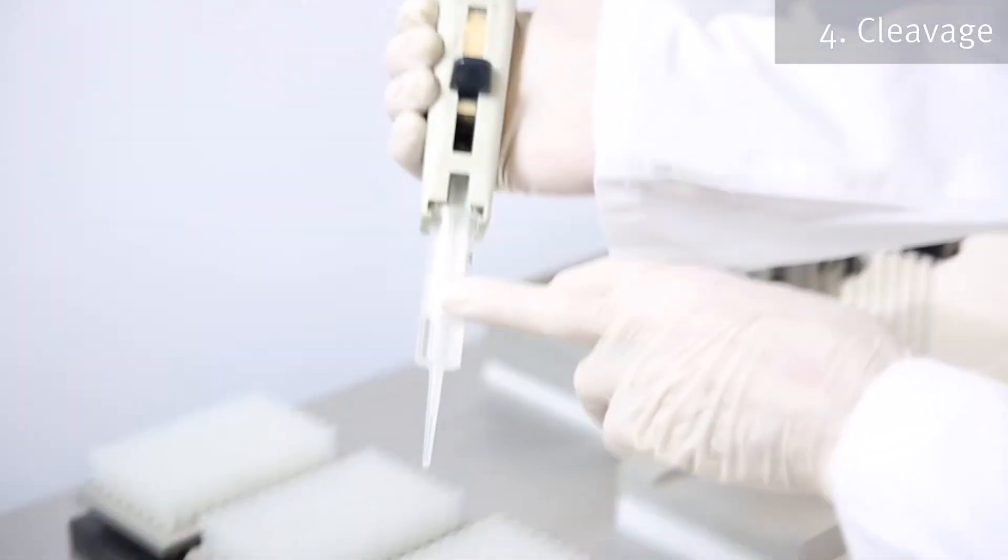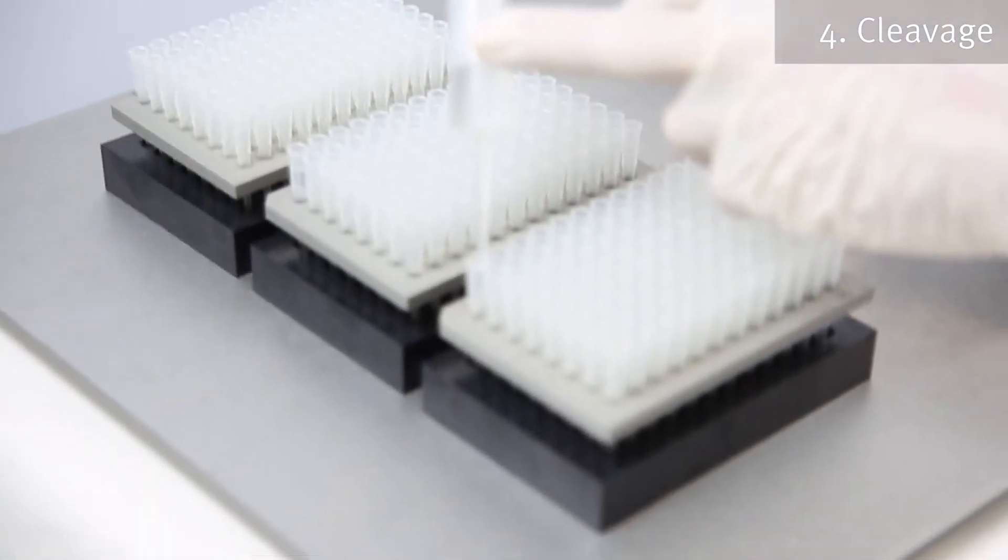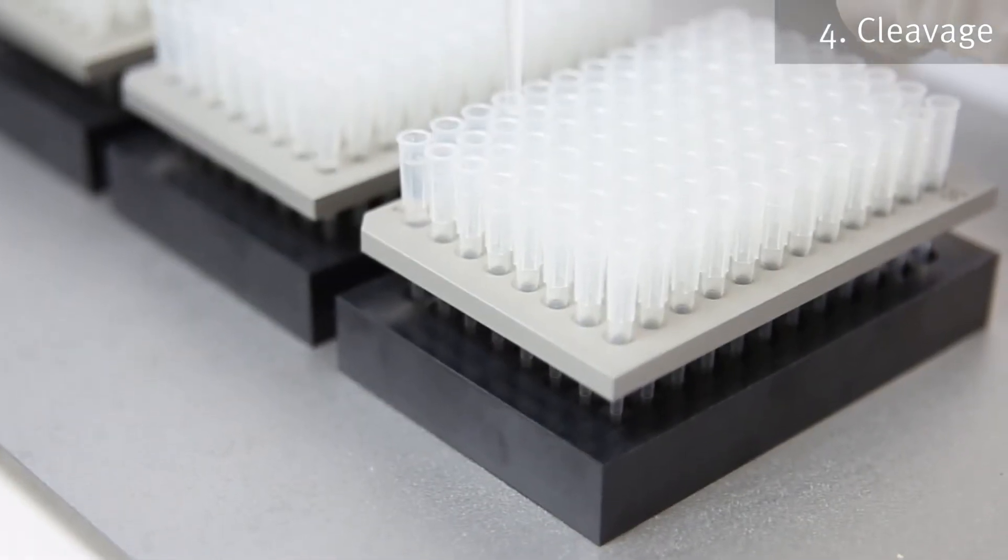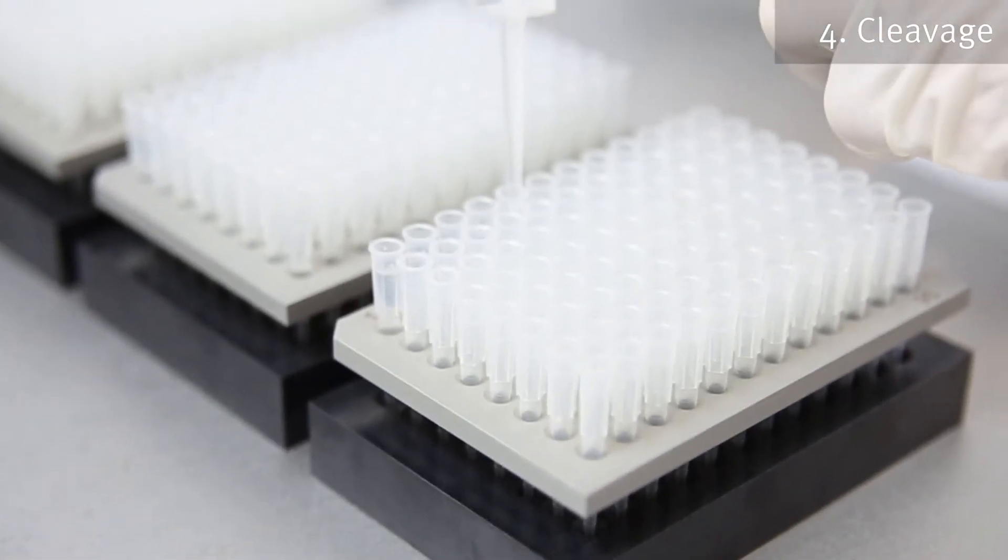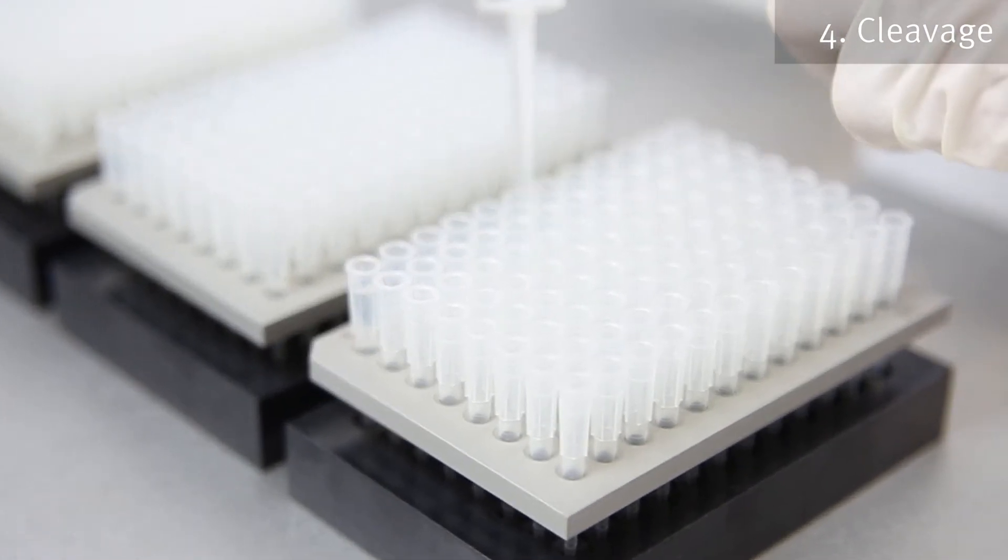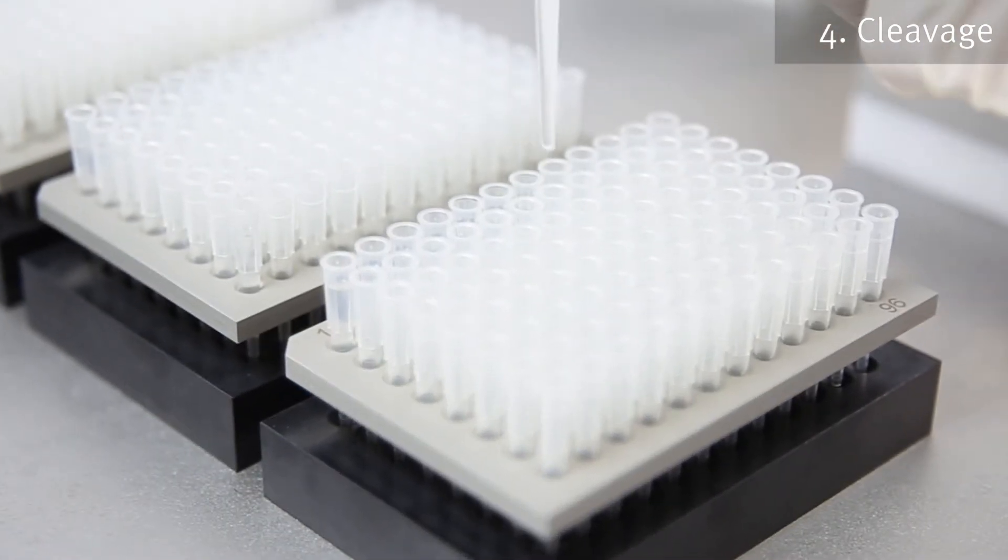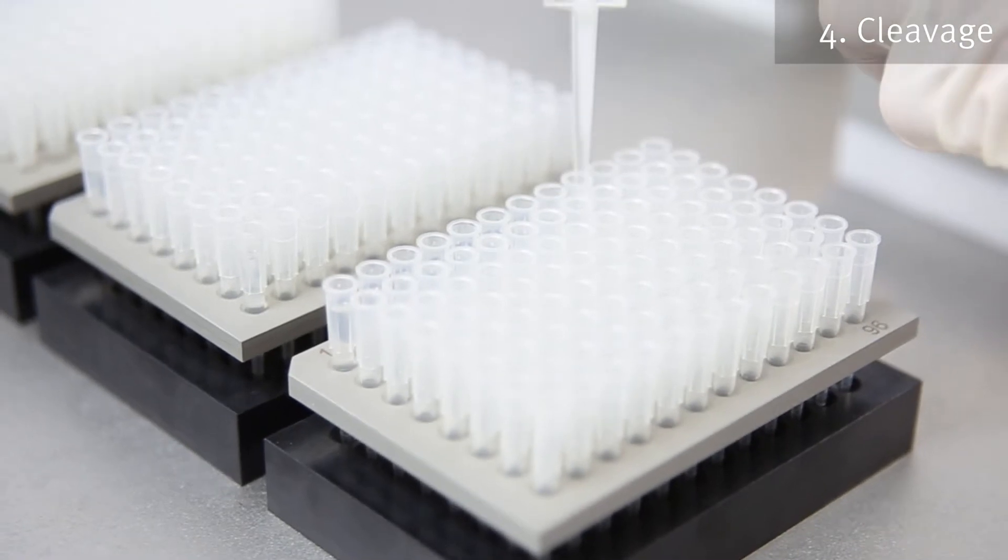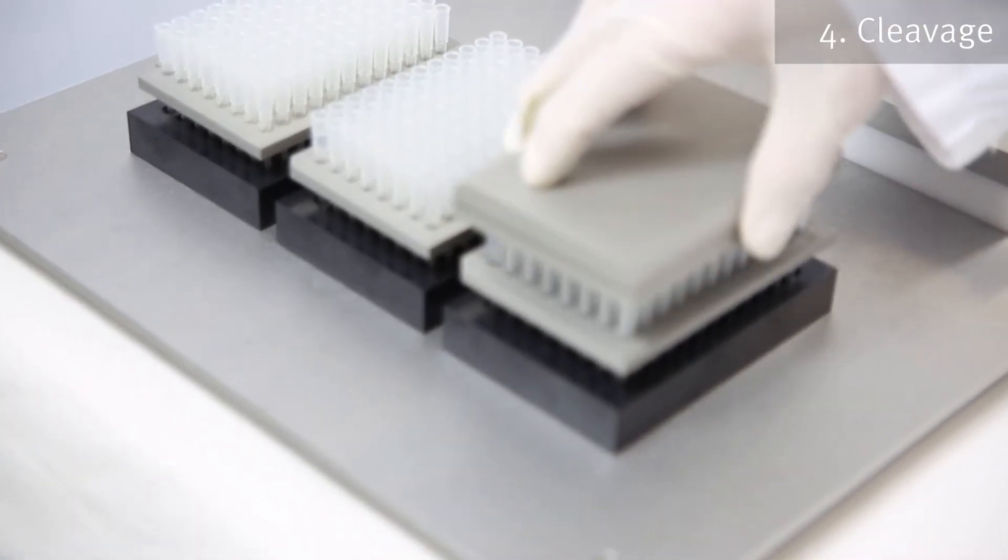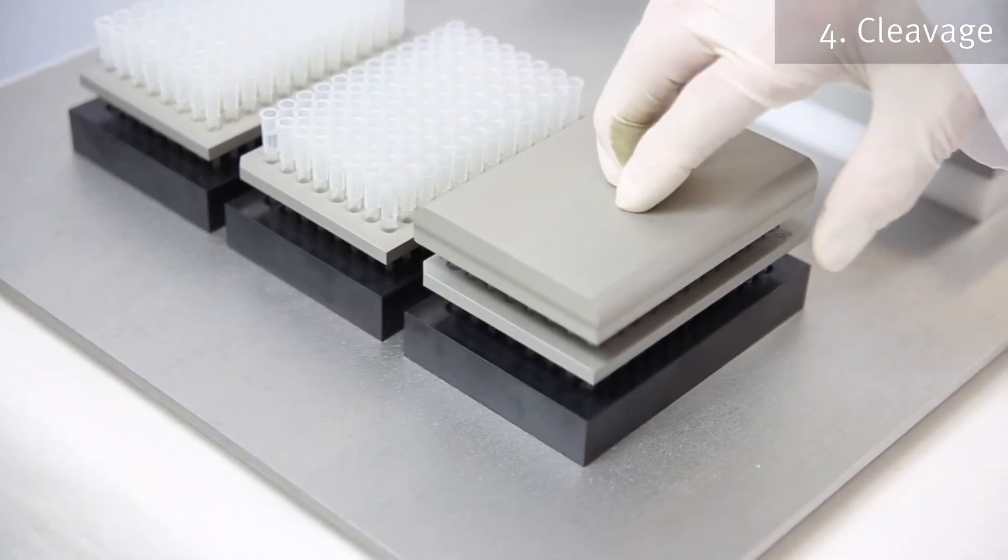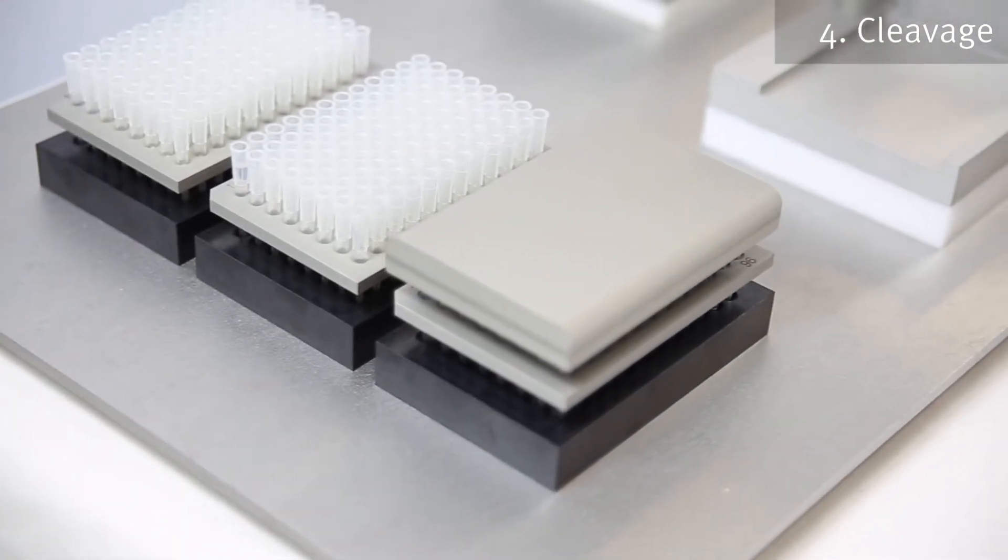For cleavage, add approximately 170 µL of the TFA cleavage cocktail to each tip reactor in the blind plate. The blind plate closes the outlets of the reactors and prevents them from emptying. Cover the tip reactors with the reactor cover plate and then cleave the peptidyl resins for the desired amount of time, normally two hours.